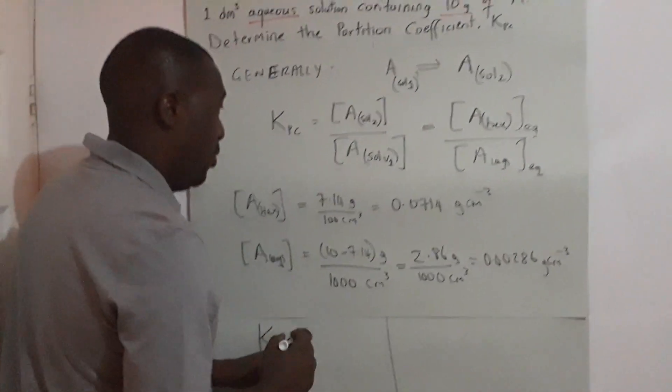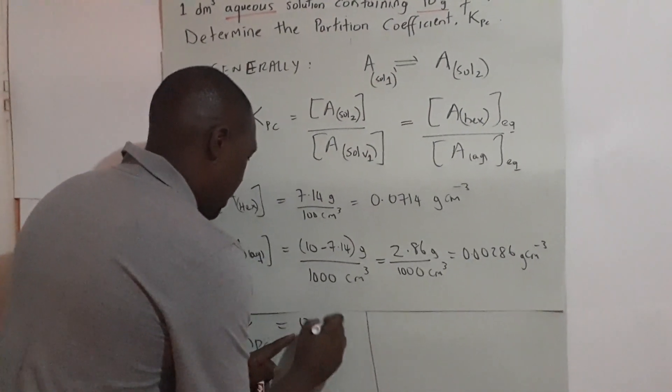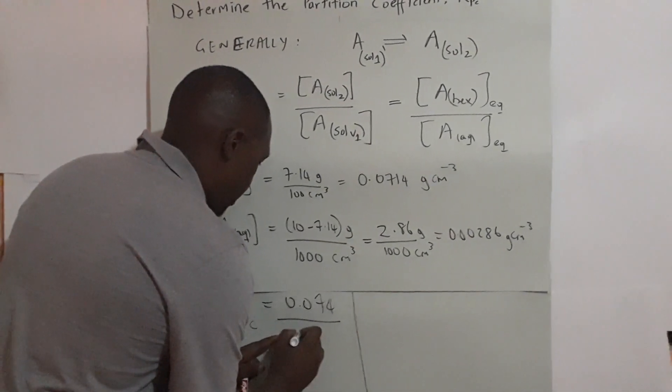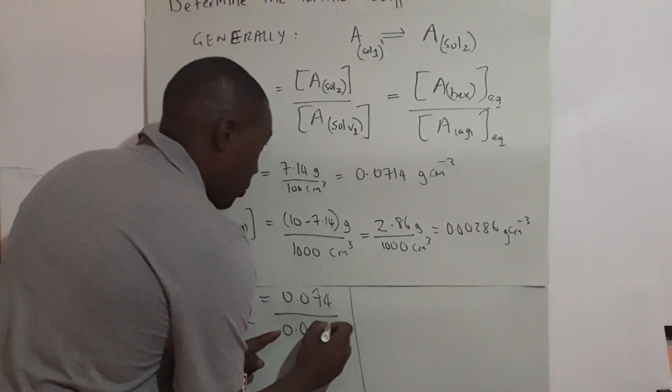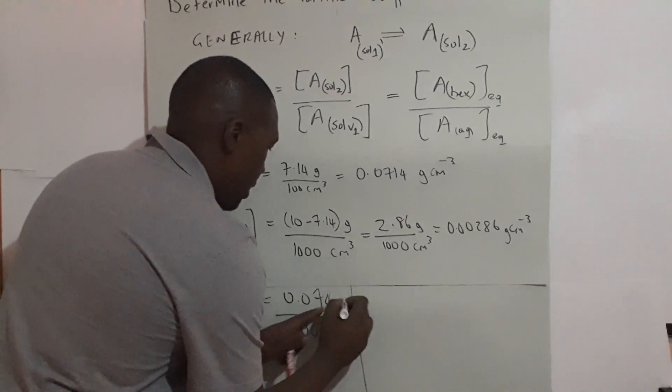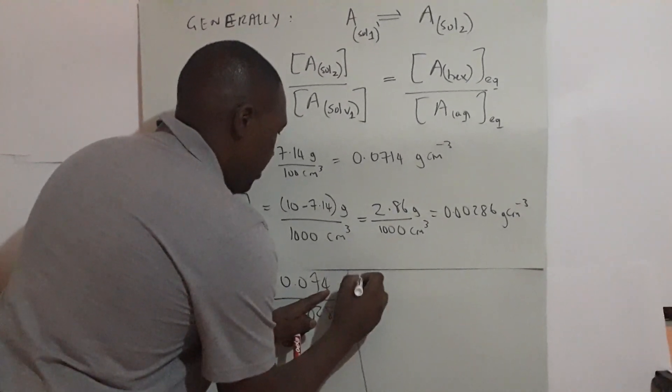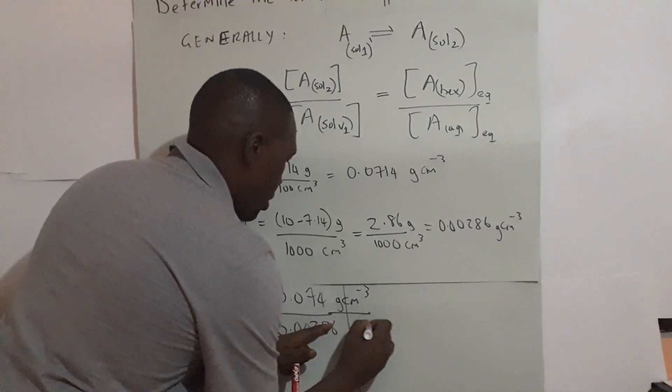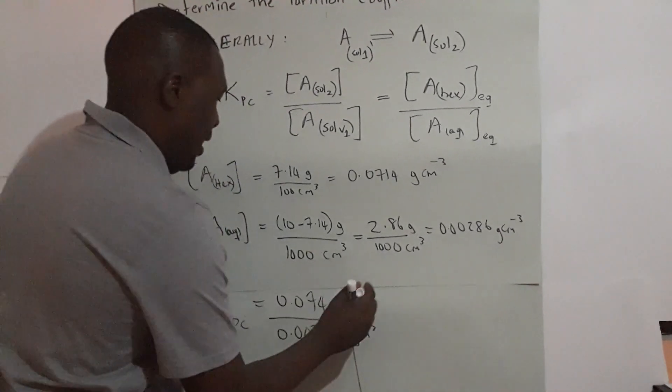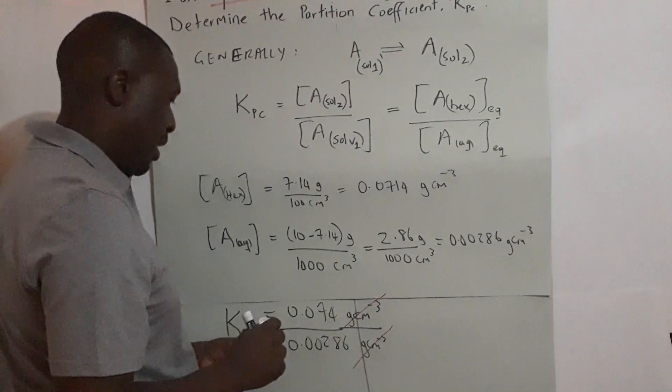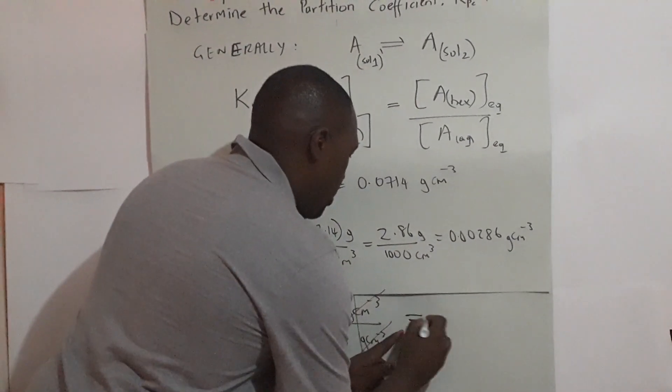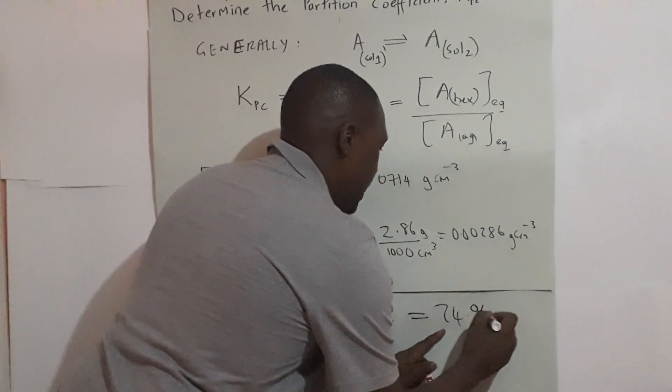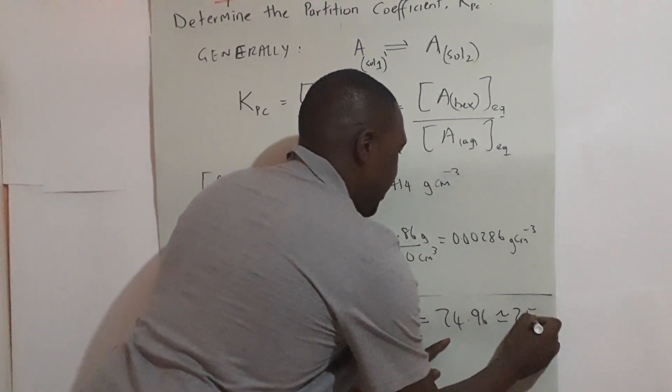So KPC equals 0.0714 over 0.00286. Both of these are in grams per centimeter cube, and they will cancel so you won't get any units for KPC. This works out to 24.96, which is approximately 25.